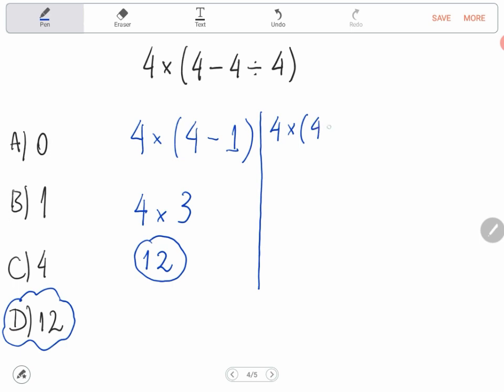Some people can conclude that 4 minus 4 is 0, then 4 times 0 divided by 4.